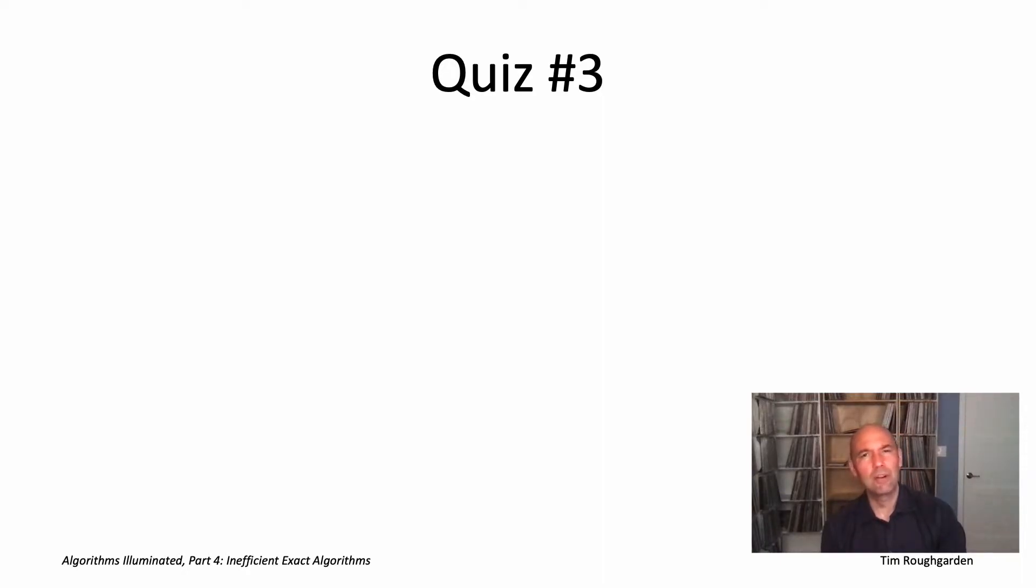Only problem is, how on earth are we ever going to do that when we have no idea what the minimum cost k-paths look like? After all, that's what we're trying to find in the first place. So here we're going to have to bring out another tool from our toolbox, one we actually haven't seen in a while: randomization.